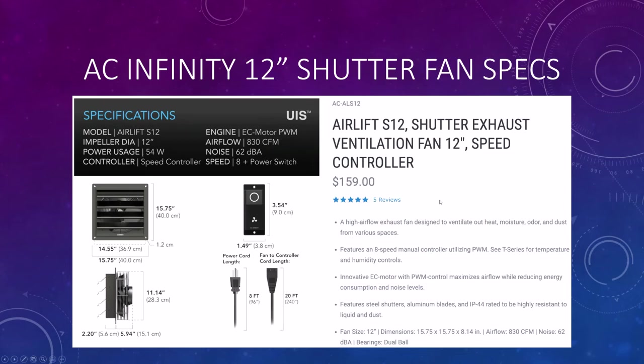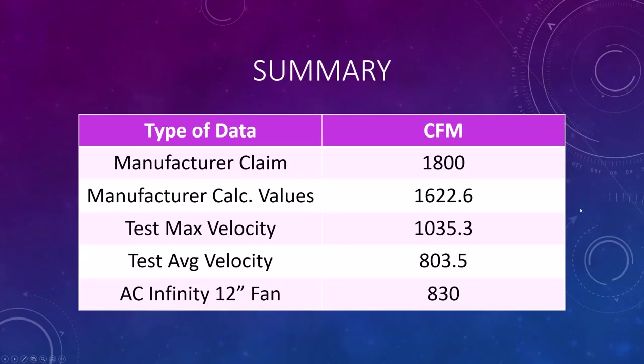So with all that said, we'll look at a summary of all the values. Again, manufacturer claims they can push 1800. I calculated with my average velocity coming out of the fan, 803.5, which is less than half of the manufacturer's claim. And it's actually approximately the same as AC Infinity. So my guess is there's probably a little bit of testing error in the test that I did, but I can't imagine there's so much error that it would be vastly different than what the AC Infinity is capable of pushing. So it's probably, I think what I tested is pretty correct.